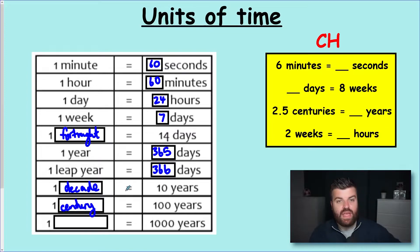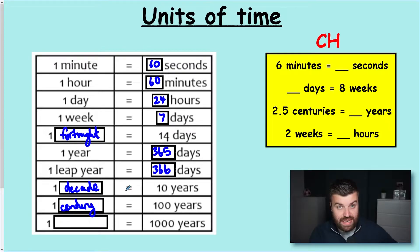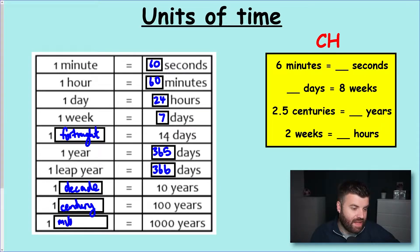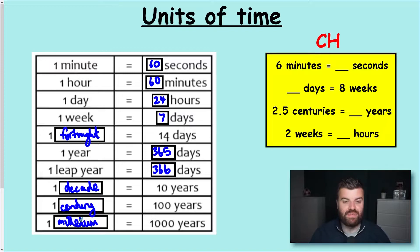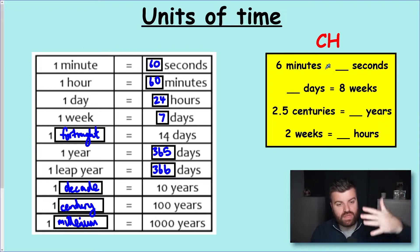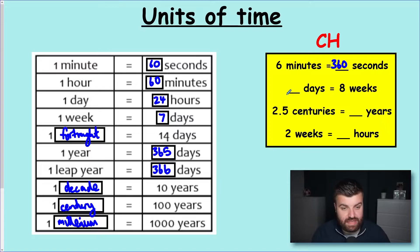You may have 'cent' in percent — per hundred — or in cricket if you score a century you score 100 runs, so there are lots of links there. One thousand years is one millennium. Every thousand years we have a millennium. As for the challenge, it was a case of using these facts and going one step further: one minute is 60 seconds, so six minutes is six lots of 60, which is 360 seconds. How many days in eight weeks? Seven times eight — this is where your times tables come in constantly.